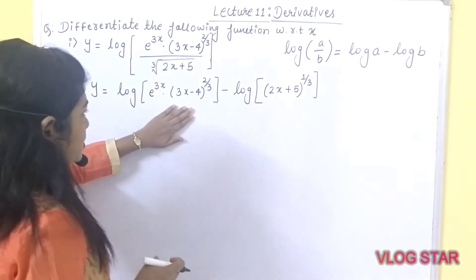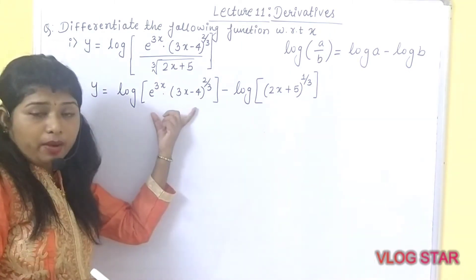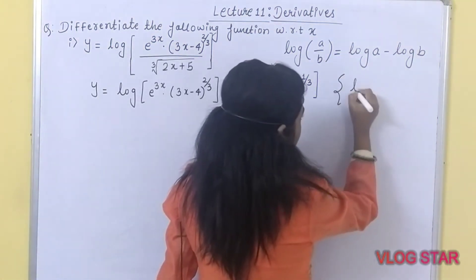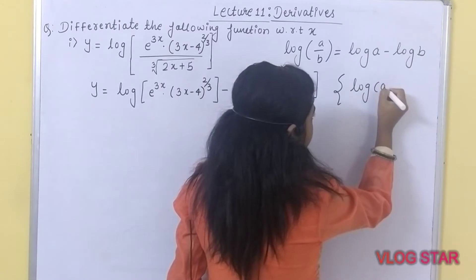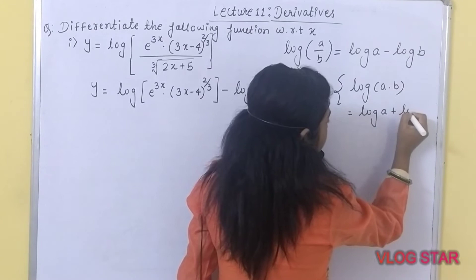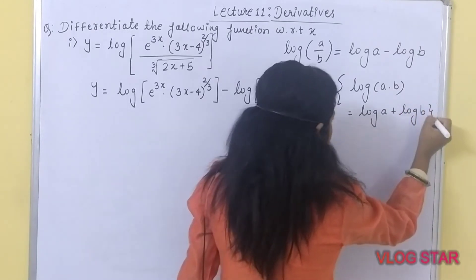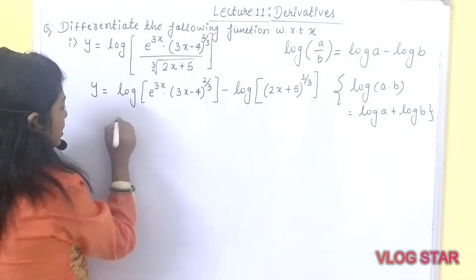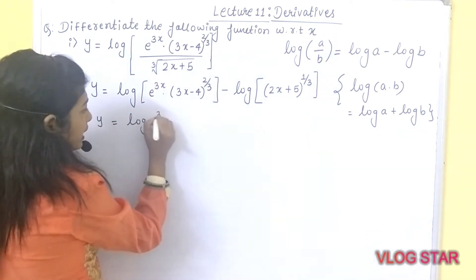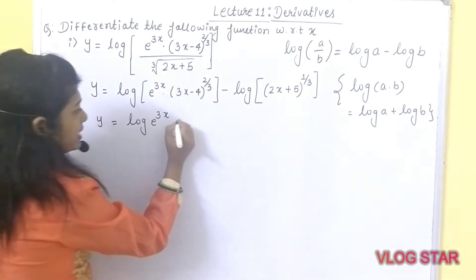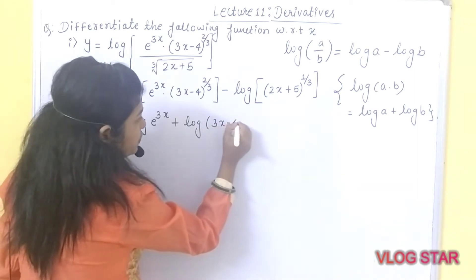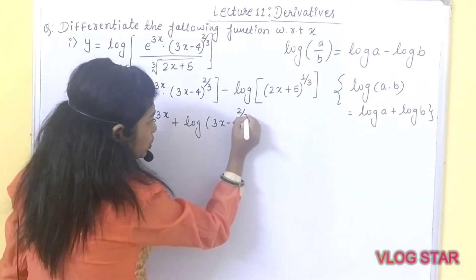But if you observe, in this particular term there are two different functions. If you remember the formula log(a·b) can be written as log a plus log b. So simply you need to separate out these functions. You will be getting y is equal to log of e raised to 3x, plus log of (3x minus 4) raised to 2/3.